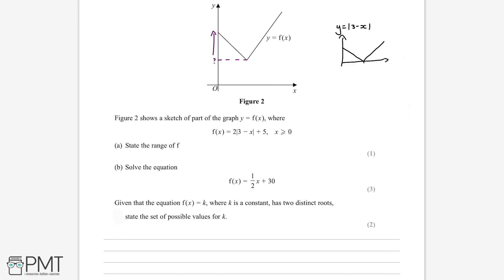The next transformation added is multiplication by 2. Adding this transformation means all of the y-coordinates were multiplied by 2, which makes the gradient of the lines a bit steeper. But if the y-coordinate at the minimum was 0, then 0 multiplied by 2 means the point touching the x-axis still has a y-coordinate of 0.